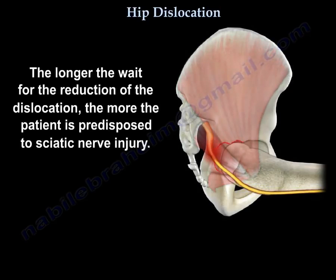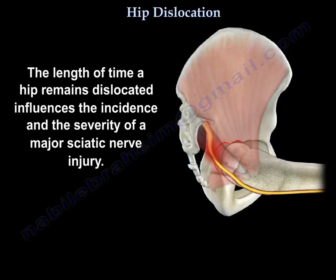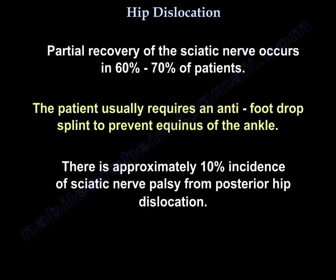Injury to the sciatic nerve usually occurs from the dislocation and not from the reduction of the hip. The longer the wait for the reduction, the more the patient is predisposed to sciatic nerve injury. The length of time a hip remains dislocated influences the incidence and severity of major sciatic nerve injury. Partial recovery of the sciatic nerve occurs in 60 to 70% of patients. There is approximately a 10% incidence of sciatic nerve palsy from posterior hip dislocation. Patients usually require an anti-foot drop splint to prevent contracture of the ankle.